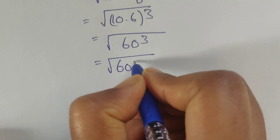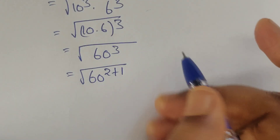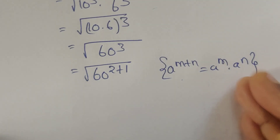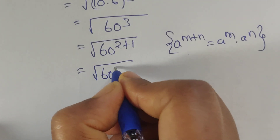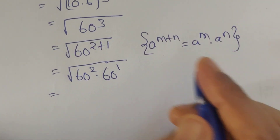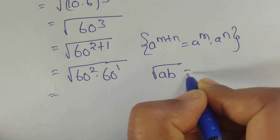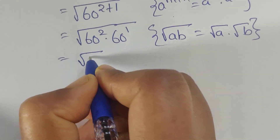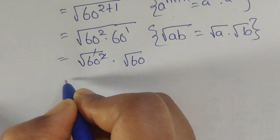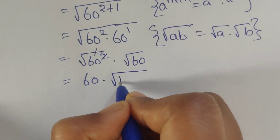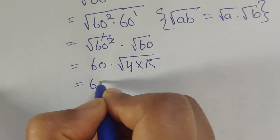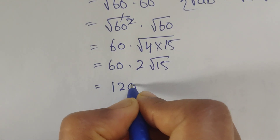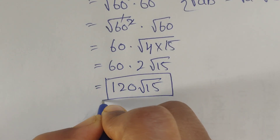We write the exponent 3 as 2+1, using the formula a^(m+n) = a^m × a^n, giving us √(60² × 60¹). Then using √(a×b) = √a × √b, we get √(60²) × √60. The square root and square cancel, leaving 60 × √60. We can write 60 = 4×15, so 60√60 = 60 × 2√15 = 120√15. This is the final answer.